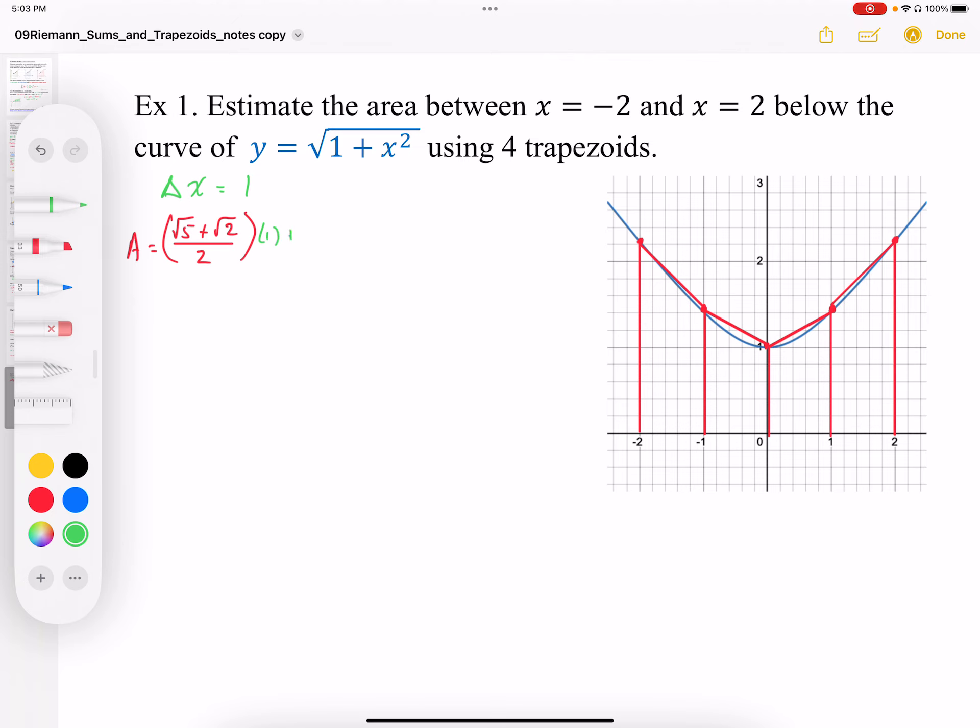And to that, I'm going to add on the next trapezoid. The next trapezoid has the left edge height of √2, the right side edge of 1, divided by 2. And again, this has an interval width of 1.